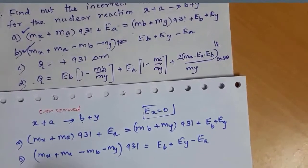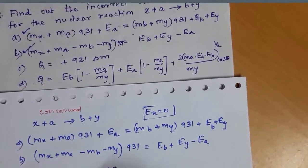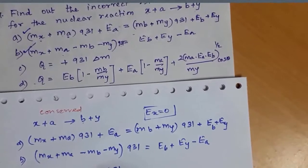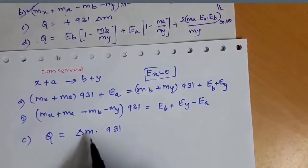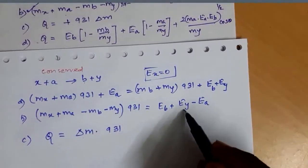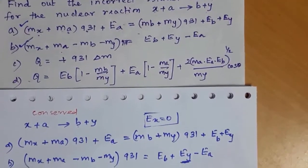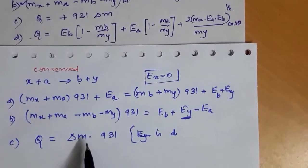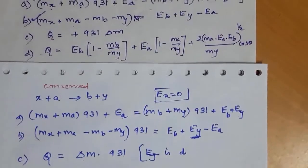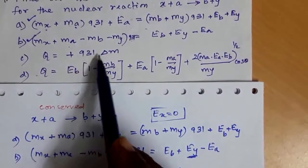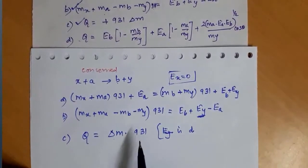The energy of the reaction is represented by Q-value: Q equals delta-M multiplied by 931 MeV, where the mass difference is converted into energy. EY is difficult to measure directly, so the energy of the reaction is calculated from the Q-value: Q equals delta-M into 931 MeV. Option C is therefore a correct statement.